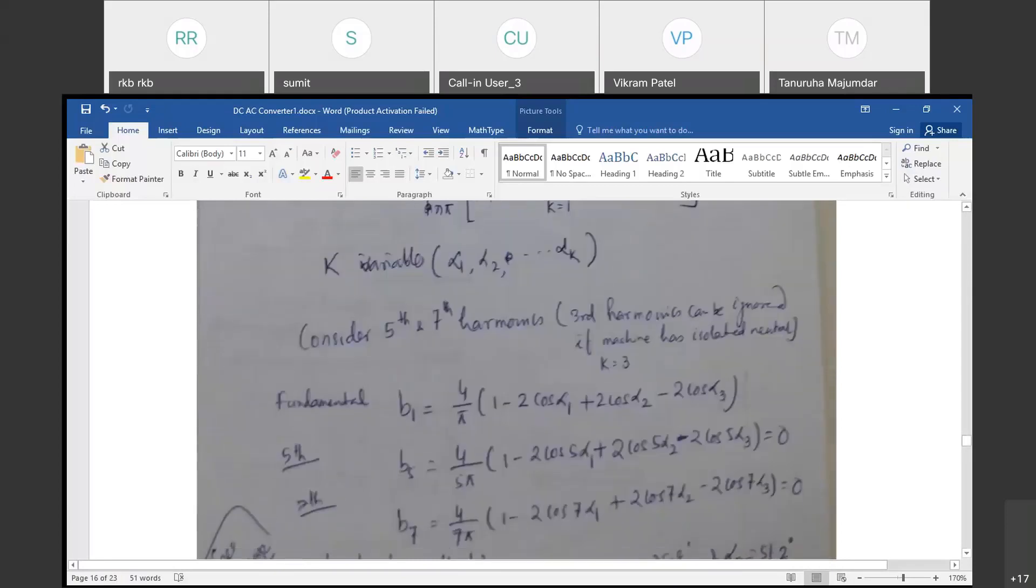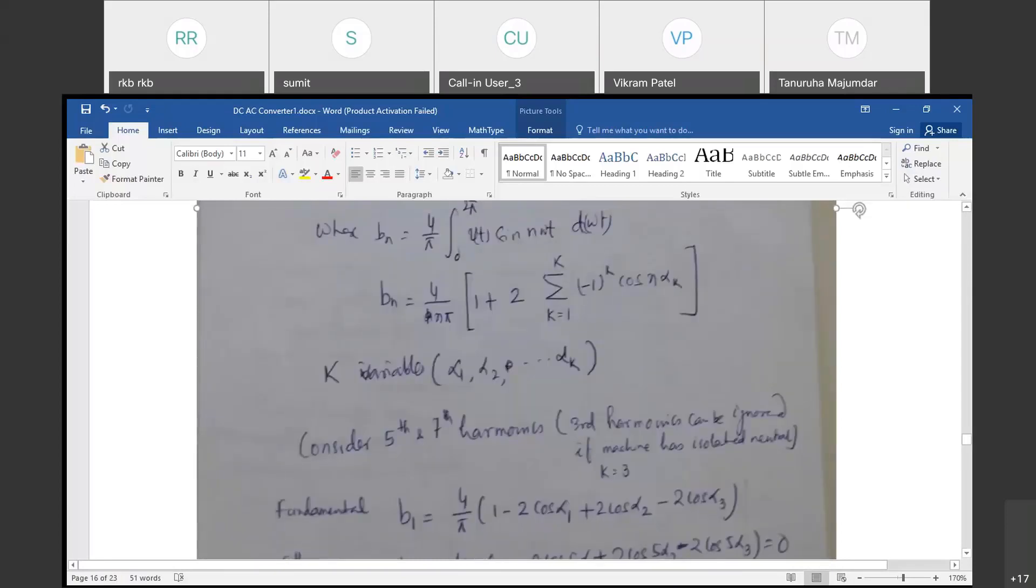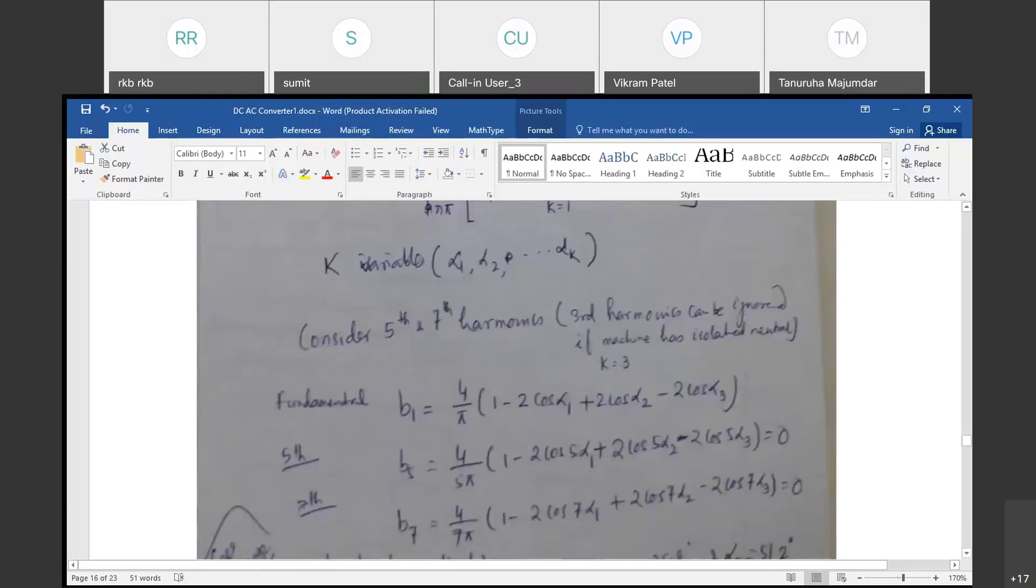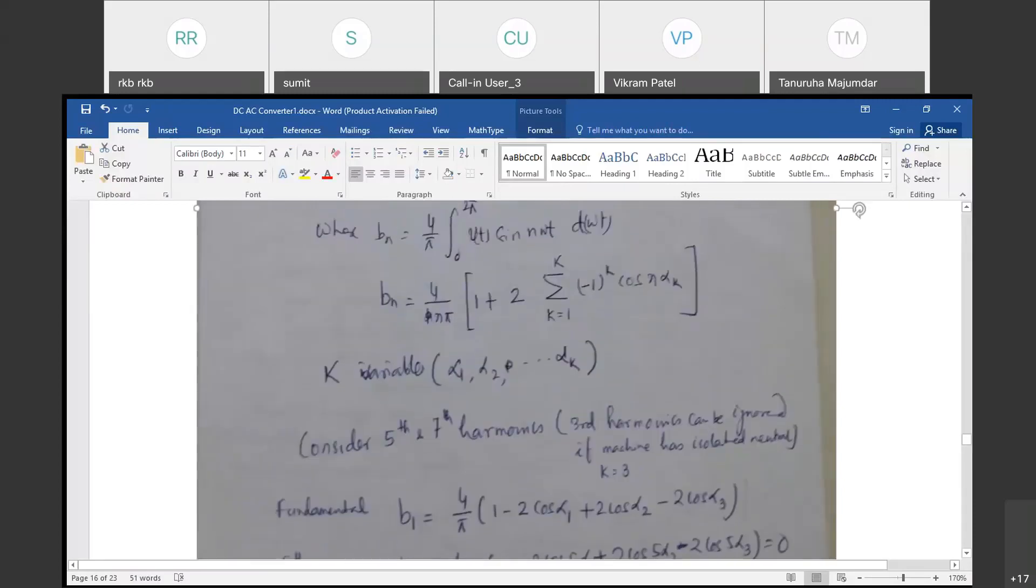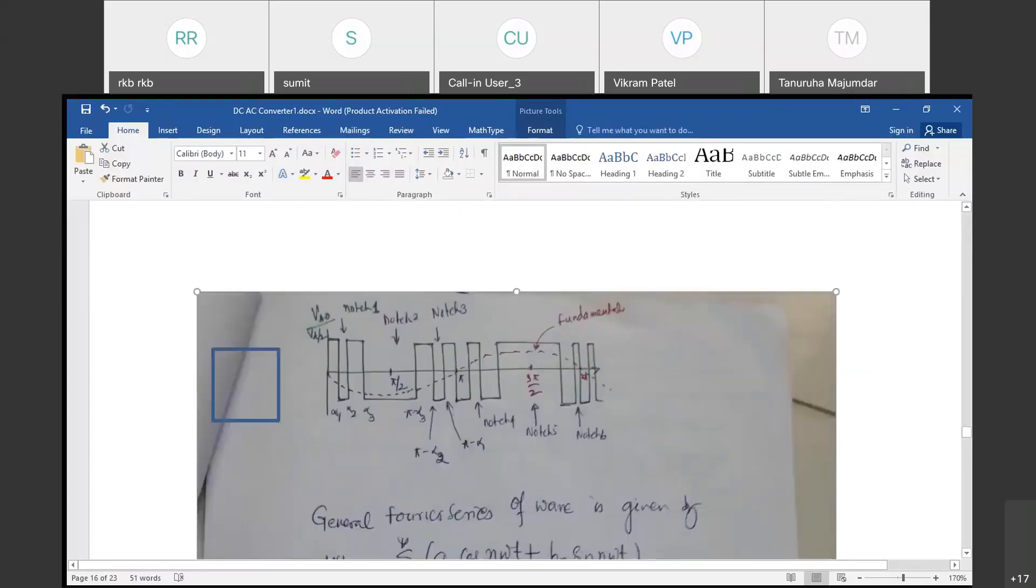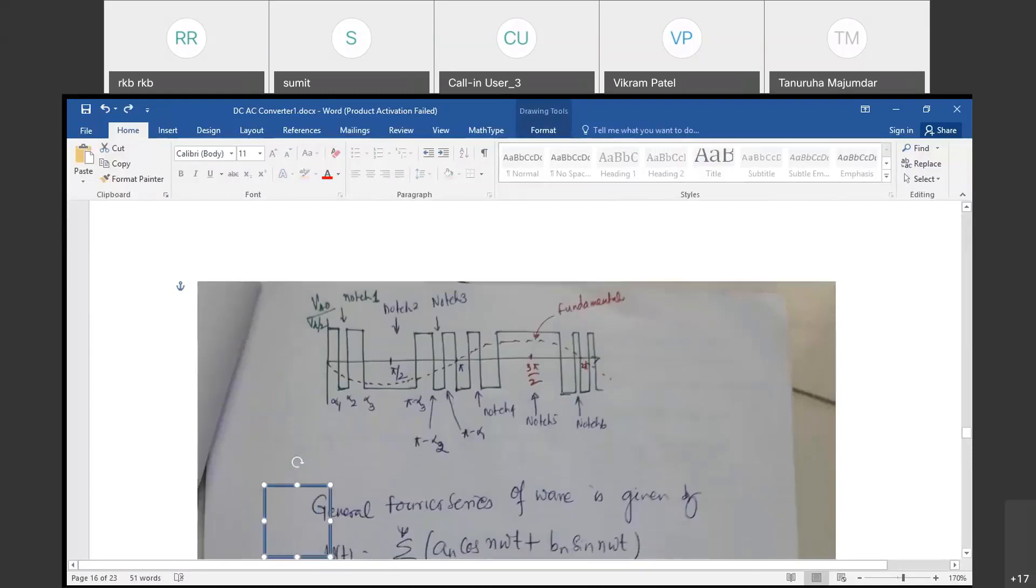Now, this fifth and seventh harmonic, you want to eliminate. That means this B equation, this Bn, is this equation. I can write the fifth harmonic, fifth harmonic and seventh harmonic. B1 is nothing but 4 by π, 2 cos α1 plus 2 cos α2 minus 2 cos α3. Here, you can put your equation in this place.